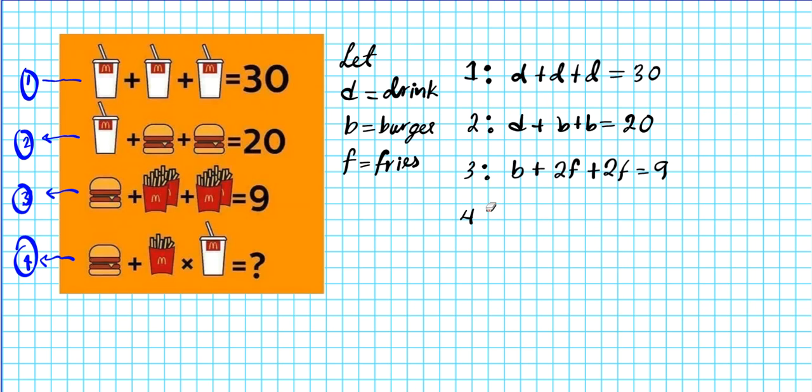And then the fourth one is, we have, this is not a complete equation. We have a burger B, plus a fry F, times a drink D equals what? You can think about this as a function that takes in three variables: burger, fries, and drinks, and returns what you get when you evaluate the burger plus the fries times a drink. So we're going to use the first three system of equations to determine what the three variables are, and then we'll substitute that into the fourth equation or function to determine what its value is.